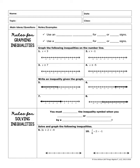We're going to use an open circle for less than or greater than signs. We will use a closed circle for less than or equal to or greater than or equal to signs. An open circle would literally be a circle that's open, and a closed circle means it's a circle that is colored in.